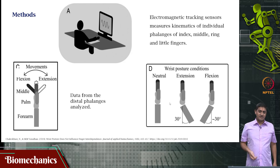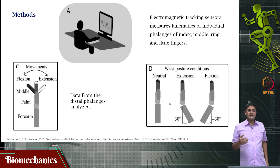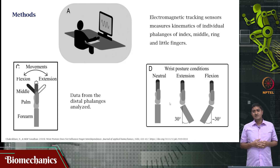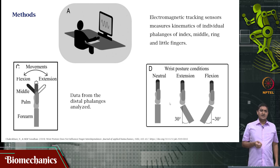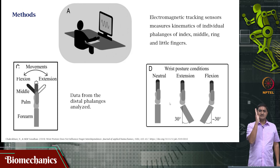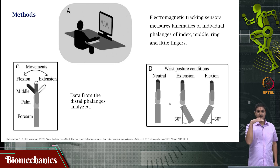We measured movements of all the phalanges of all four fingers and informed participants which was the instructed finger. There were three conditions: the neutral condition in which the wrist remains neutral, the condition when the wrist is extended, and the condition when the wrist is flexed. The angle of extension and flexion was 30 degrees.